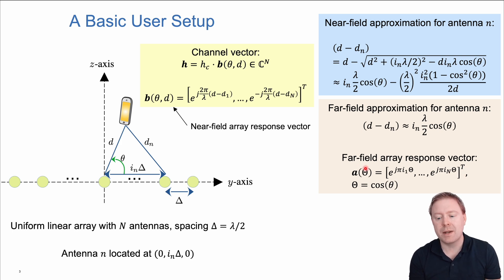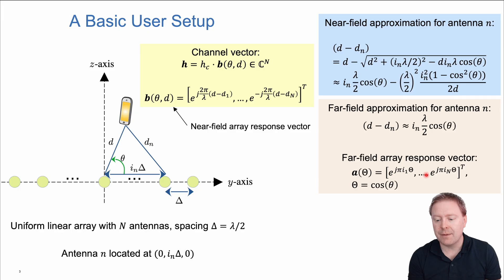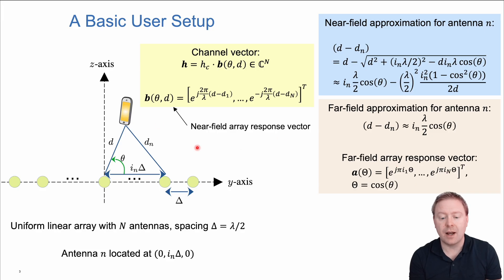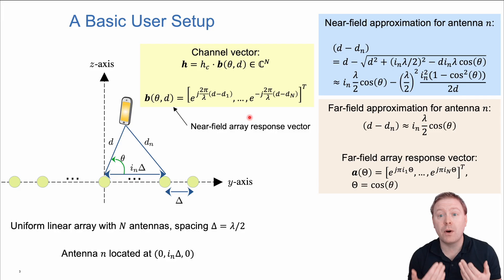This far-field array response vector depends on uppercase Theta, which is the cosine of lowercase theta—also known as the directional cosine—multiplied with the antenna index, j, and pi, giving us the different phase shifts. This is exactly how the near-field array response vector looks when we are far away, where we see no spherical wavefronts at all.